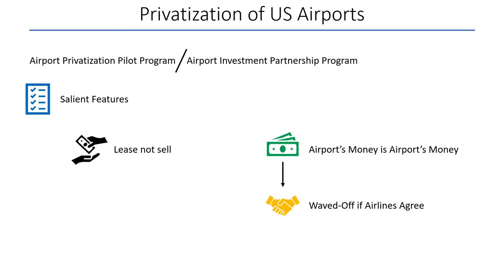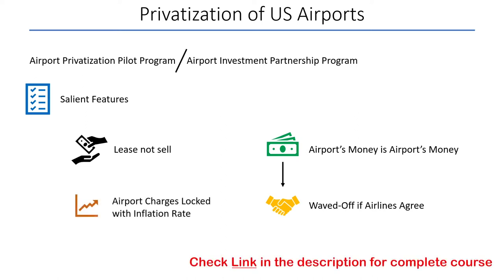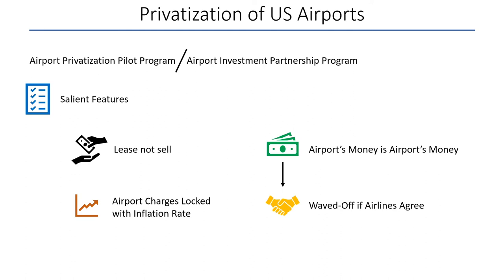Third, the private party could not increase airport charges for airlines faster than the inflation rate. This rule was made so that there remains a leash on the private party regarding what it charges airlines, which in turn affects what airlines charge passengers. This limitation could also be relaxed if airlines agreed.